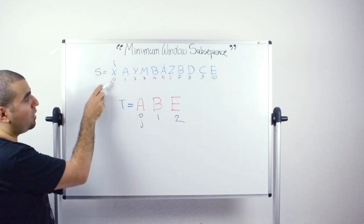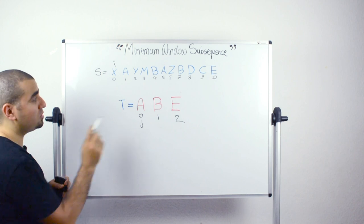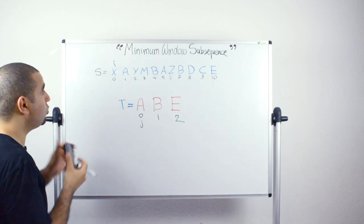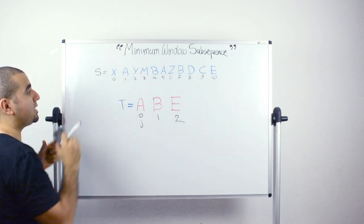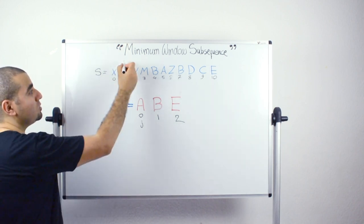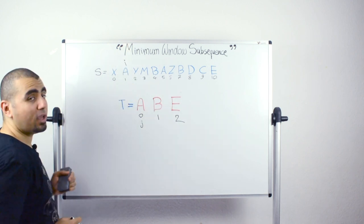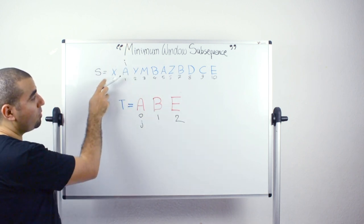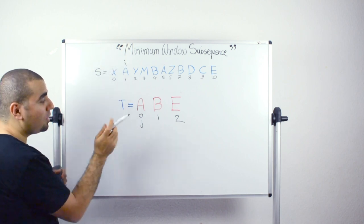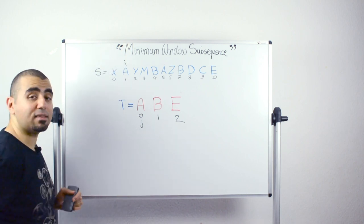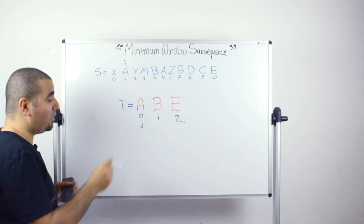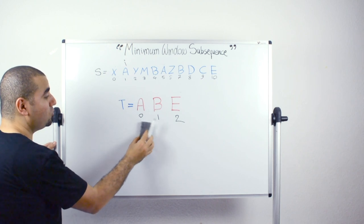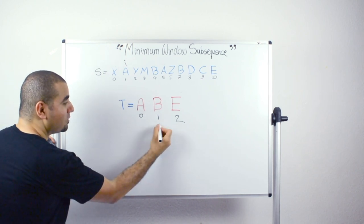We start with i at position 0 and j at position 0. Do we have a match? No, we don't. Then we move i to position 1 and keep j as is. Do we have a match between the character at position i and the character at position j? Yes, it's 'a' and 'a'. Then it's time to move j to the next character.